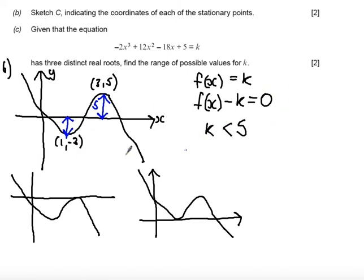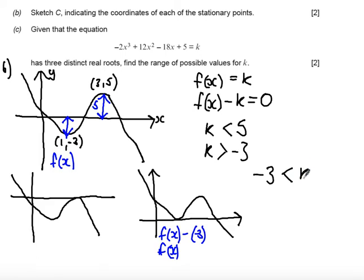Or to get this one down the bottom here, this would be a translation of f of x minus minus 3 so that it moves upwards and gives us a positive. Now what we know is that actually any value greater than k equals minus 3 will give us this result, so I also know that k must be greater than minus 3.